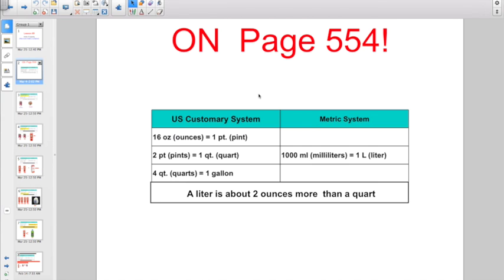We saw one of these when we were doing units of length as well. Over here on the left, we have the U.S. customary system: 16 ounces equals a pint. There's going to be two pints in a quart, four quarts in a gallon.